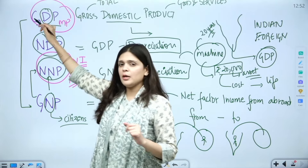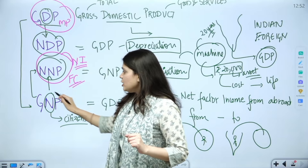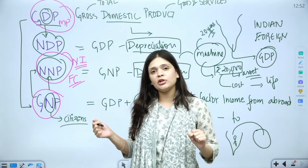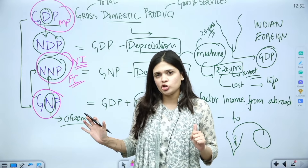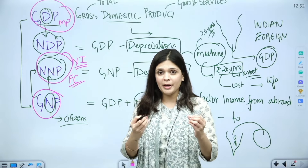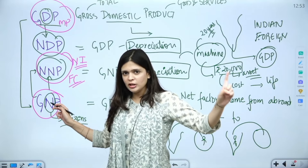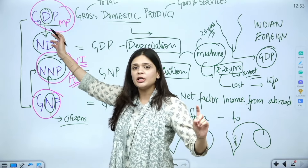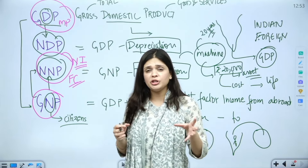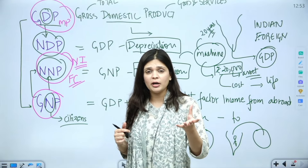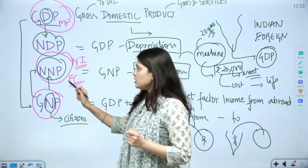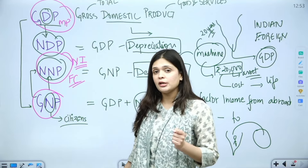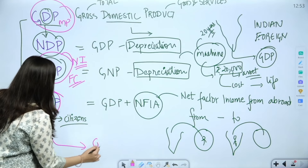Using the expenditure method, we find out GDP at market price for our country. GNP is used for international comparisons by institutions like the World Bank and IMF, and is also known as GNI. We don't use NNP for international comparisons because every country has a different rate of depreciation. For domestic comparisons, we track GDP to see if it is increasing.